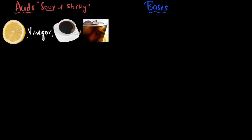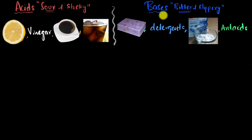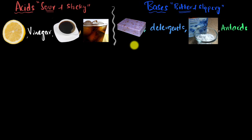What about bases? Well, it turns out bases are bitter tasting, and they're quite slippery. Common examples would be soaps. If you've had soap water go into your mouth, you've probably tasted bases and you know they are bitter. If you've tasted stuff with too much baking soda in them, they taste bitter — because bases taste bitter. Other examples include detergents, antacids, and so on. But of course, this is not a great definition of acids and bases. There could be so many other things that are sour or bitter which may not be acids or bases.